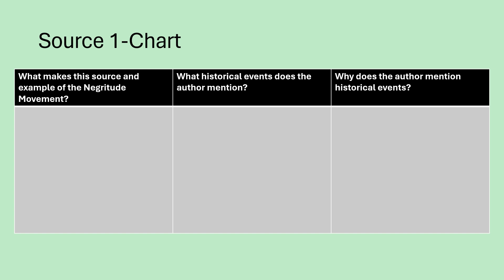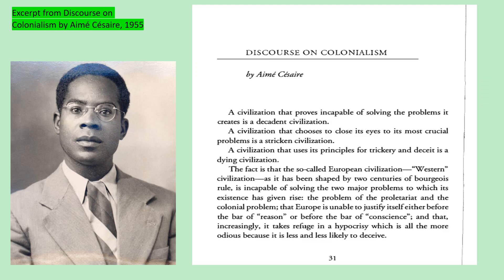We're going to start looking at Source 1. These are the questions you want to think about with your chart as you read: What makes this source an example of the Negritude movement? What historical events does the author mention? And why do you think the author mentions those historical events? The first source is 'Discourse on Colonialism' by Aimé Césaire, and he mentions a lot about civilization as he starts out.